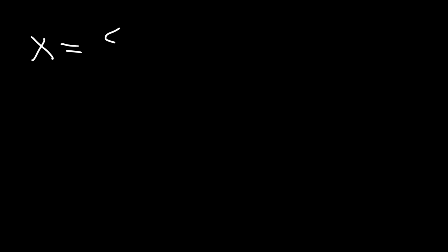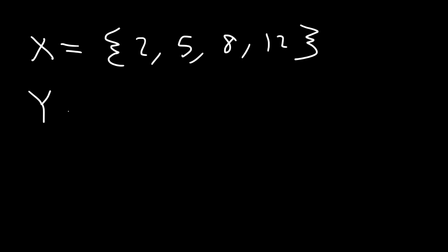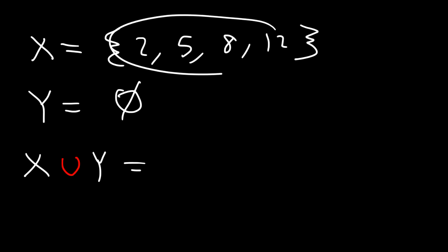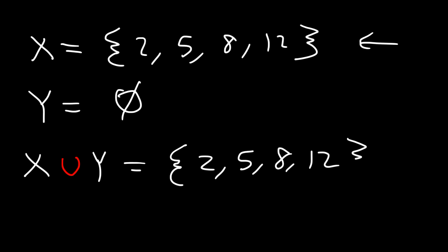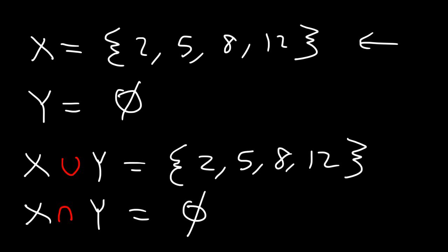Let's say that set X contains the numbers 2, 5, 8, 12, and set Y is an empty set. What is the union of a set with numbers and an empty set? The empty set is not going to add anything — it's like saying 15 plus 0, that's going to be 15. So therefore, the union of set X with an empty set Y is going to be the same as set X: 2, 5, 8, and 12. But the intersection of a set with something and a set with nothing is going to be an empty set. So just something to keep in mind.